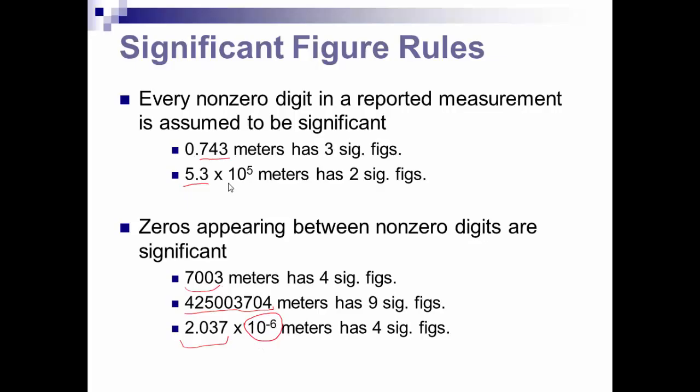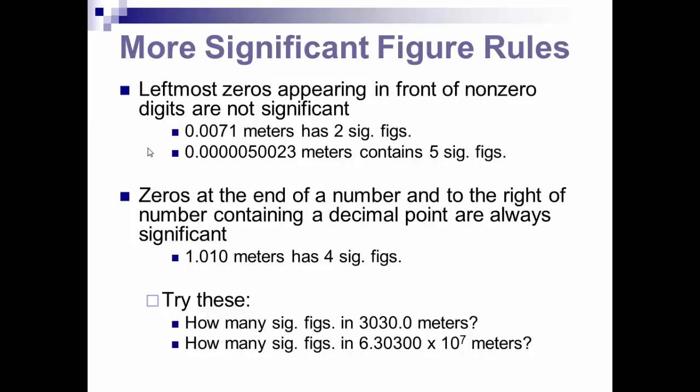The zeros between non-zeros are significant also. So here we have four. Here we have nine, which is a pretty large amount of significant figures for a measurement. And then finally down here, we have four. It doesn't matter that this is a really small number or here that this is a really big number. Because they're written in scientific notation, it's only the number of digits in the coefficient that's important.